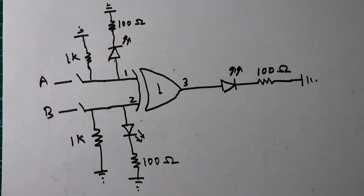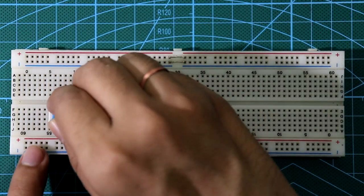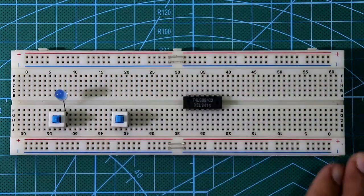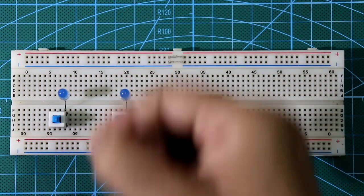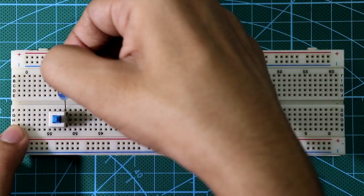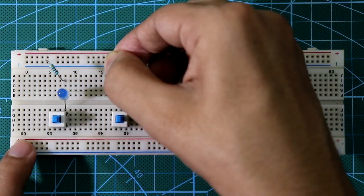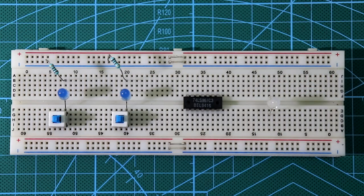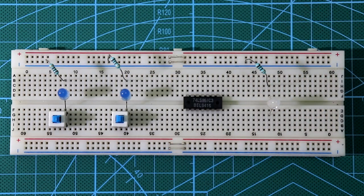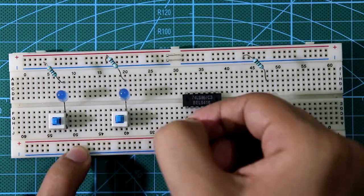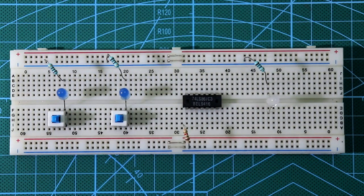This is our final circuit to build on the breadboard: IC 7486, input switch A, input switch B, input LED A, input LED B — each connected with a 100 ohm resistor to ground. Put the output LED; the cathode of the LED is connected with a 100 ohm resistor then to ground. Connect pulldown resistors on input A at pin number 1.